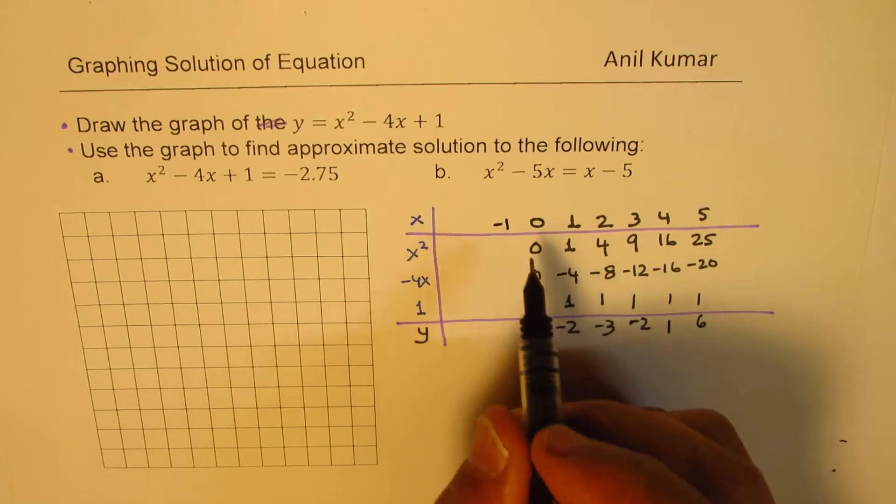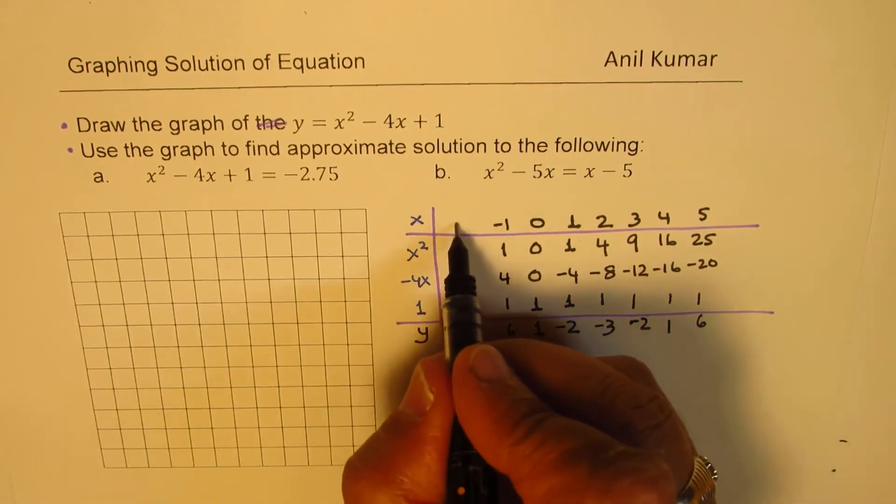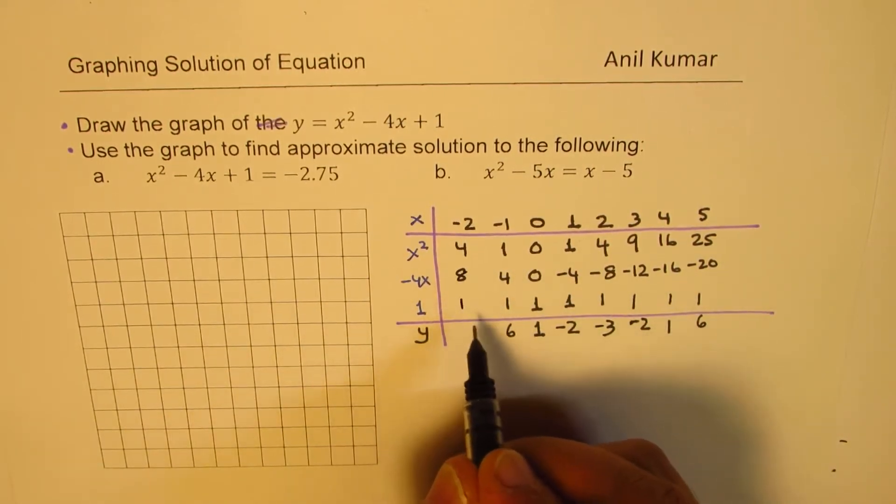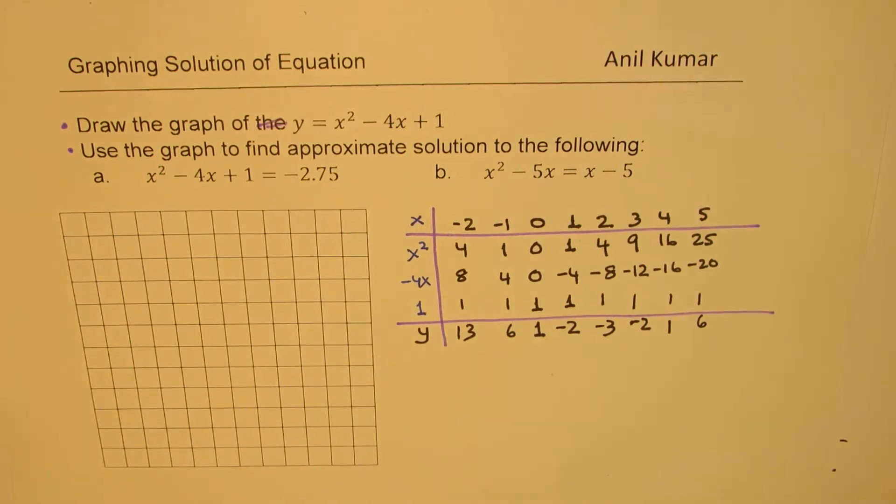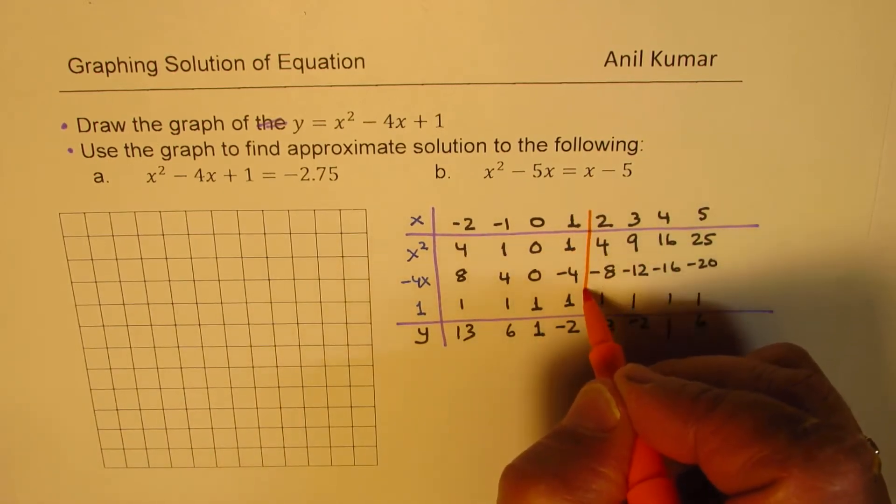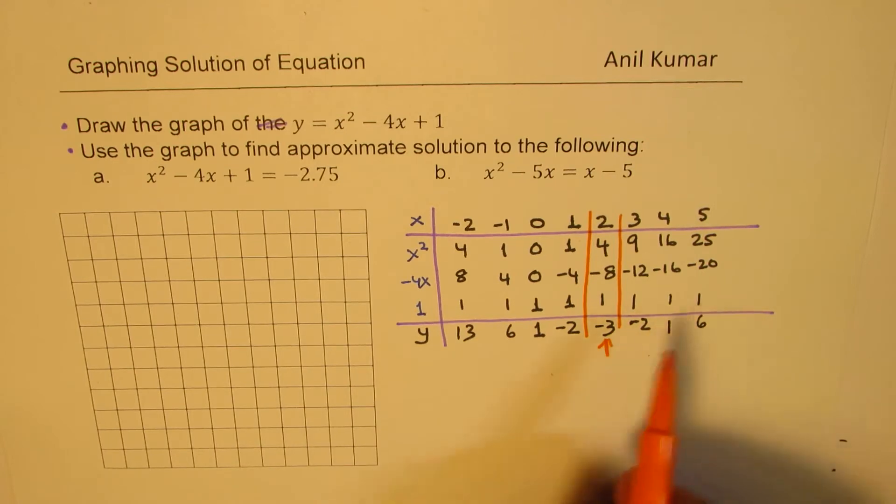Let's take a value minus 1. Minus 1 square will be 1, that becomes plus 4 and 1. We get 6 here. For minus 2, square will be 4, that is going to be 8 and 1, 13. So these are the values which you get. Well, you also see here that we get a minimum value at x equals 2. So that gives you the minimum value. And then from there, we do symmetry.